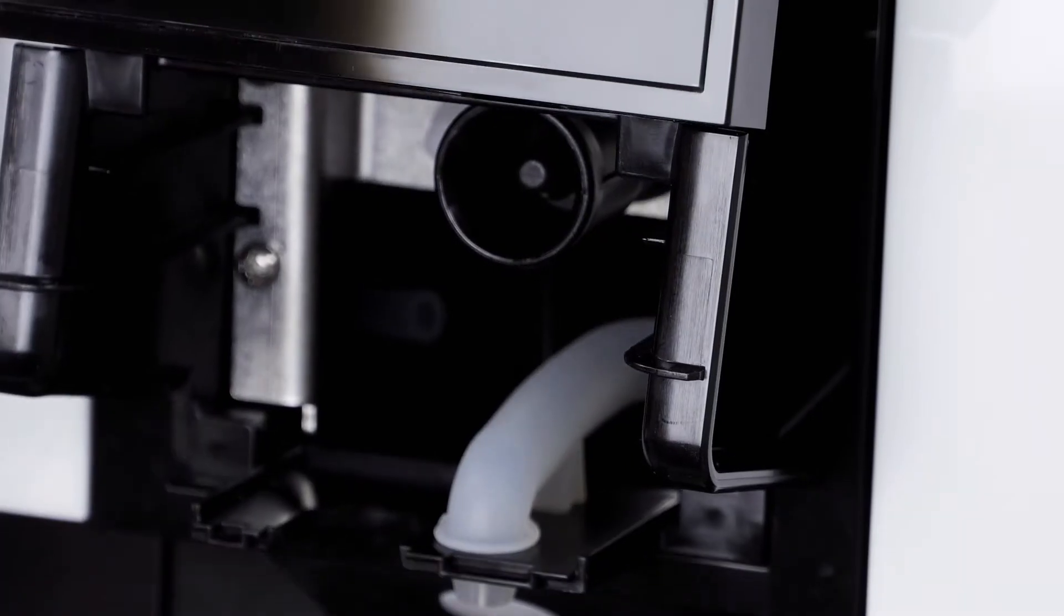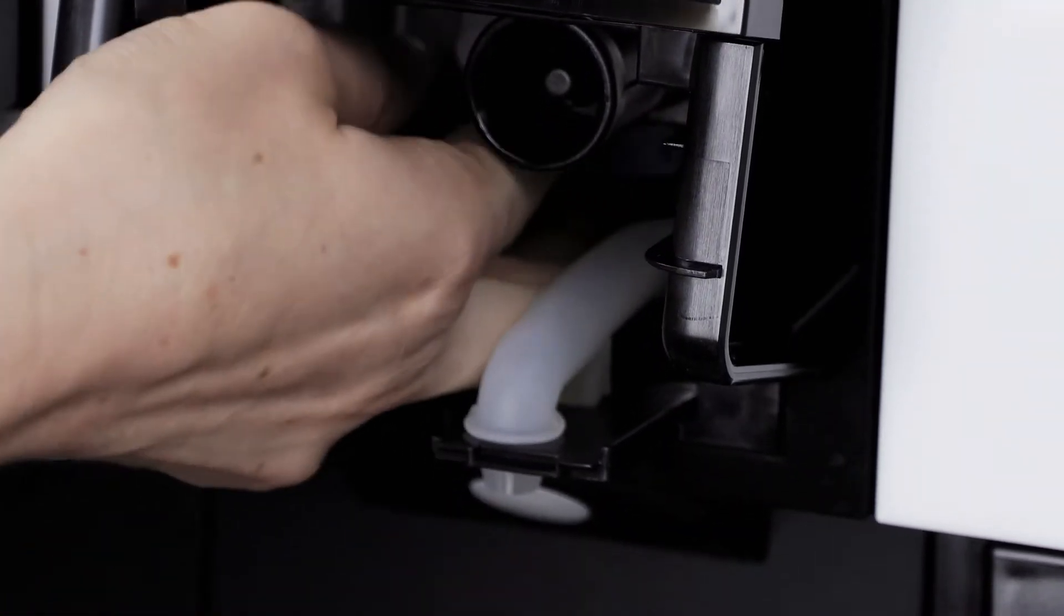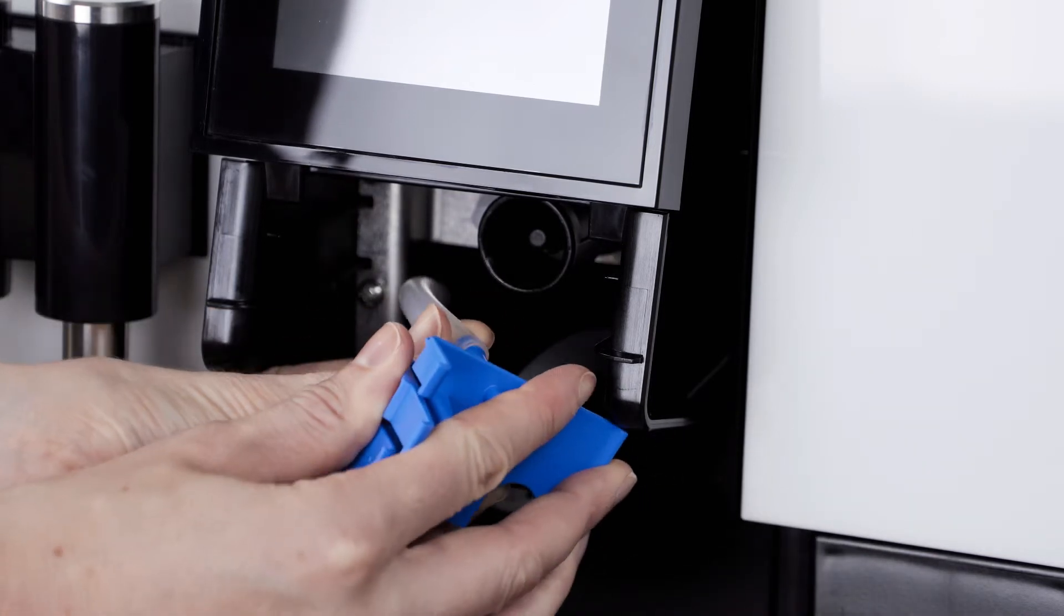Guide the milk hose into the machine from the left. Take hold of the milk hose inside the machine and pull it towards you. Attach the milk hose to the blue aperture.